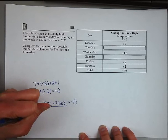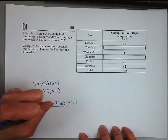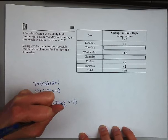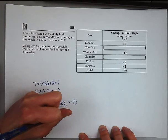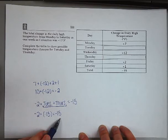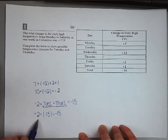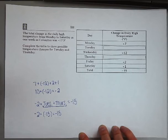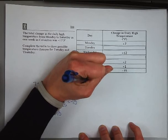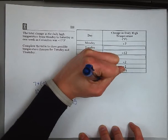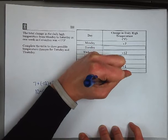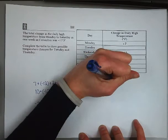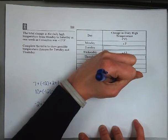We see that negative two plus negative thirteen gives us negative fifteen. We know it's negative thirteen because our total is lower than negative two, so we're going in the negative direction by thirteen to reach negative fifteen. What we've found is that the total change from Tuesday and Thursday together is negative thirteen.